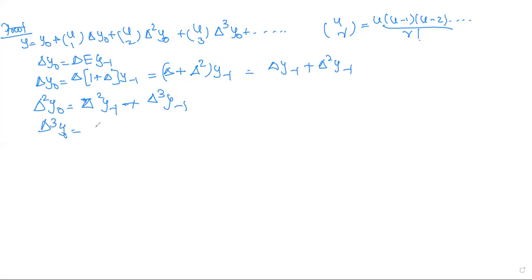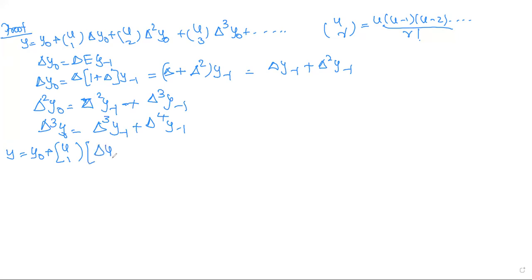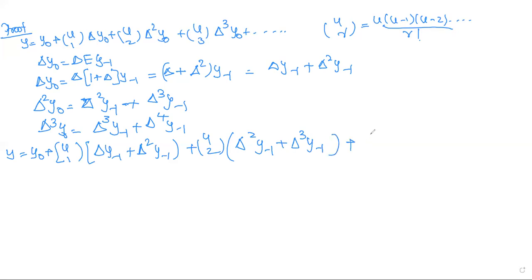Continuing, Δ³y0 = Δ³y₋₁ + Δ⁴y₋₁. When we substitute these expressions, we get terms involving Δy₋₁, Δ²y₋₁, Δ³y₋₁, Δ⁴y₋₁, and so on.